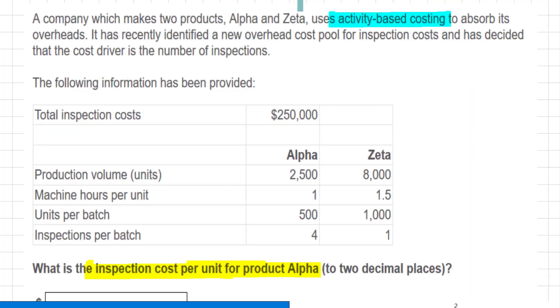We've got two products, alpha and zeta, using ABC. The cost pool everybody, the new cost pool is for inspection costs, and the cost driver number of inspections. Guys, that is step one, pool. Step two, driver.